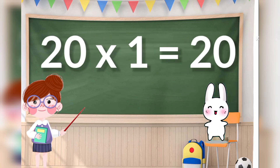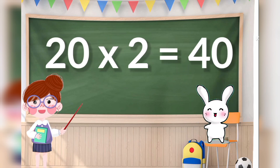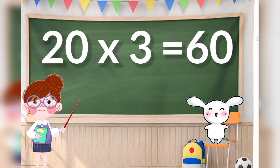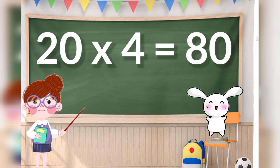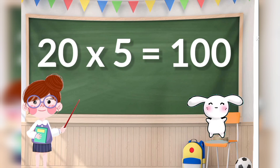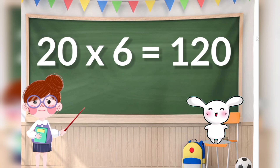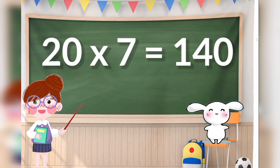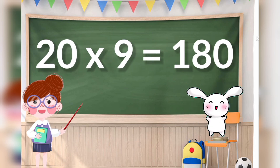20 ones are 20, 20 twos are 40, 20 threes are 60, 20 fours are 80, 20 fives are 100, 20 sixes are 120, 20 sevens are 140, 20 eights are 160, 20 nines are 180.